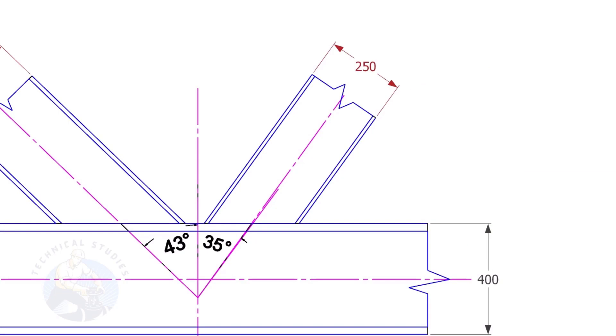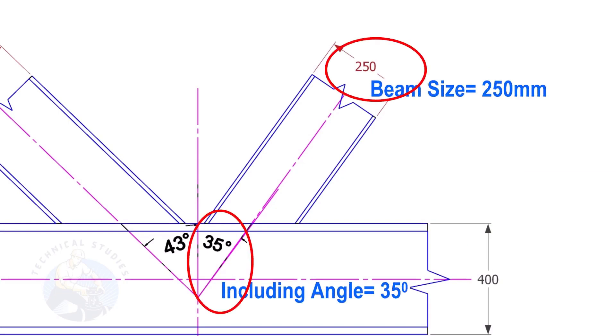Here, the size of the beam is 250, and the including angle is 35. Let us calculate the cutback.